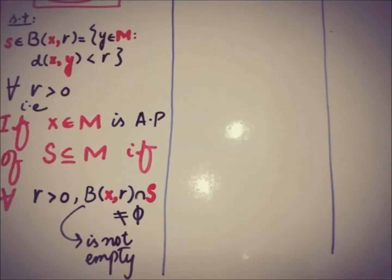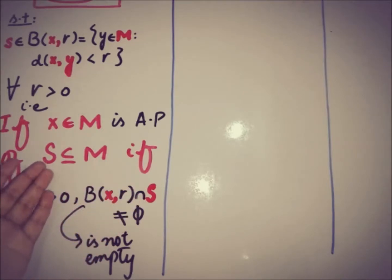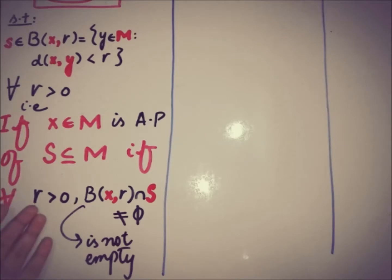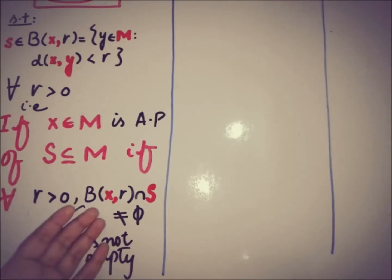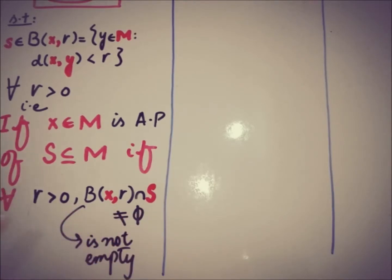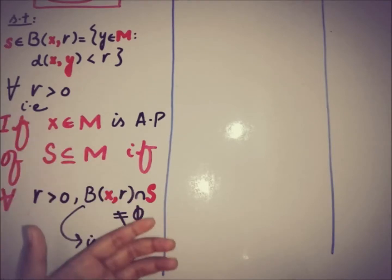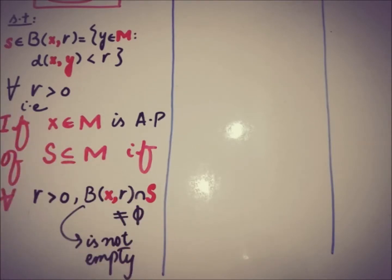We can write this formally as: x is an element of a metric space M and is an adherent point of set S — a subset of M — if for all r greater than zero, the open ball B(x, r) intersection with S is not equal to the empty set. This is the formal definition of an adherent point.